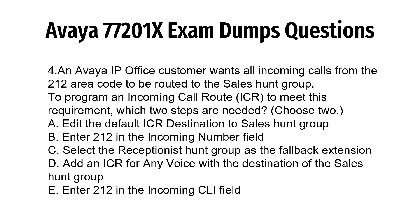Question 4. An Avaya IP Office customer wants all incoming calls from the 212 area code to be routed to the SalesHunt group. To program an incoming call route to meet this requirement, which two steps are needed? A. Edit the default ICR destination to SalesHunt group. B. Enter 212 in the incoming number field. C. Select the receptionist hunt group as the fallback extension. D. Add an ICR for any voice with the destination of the SalesHunt group. E. Enter 212 in the incoming CLI field.